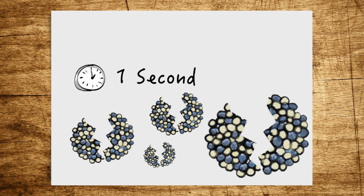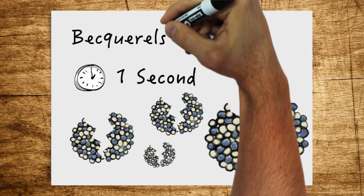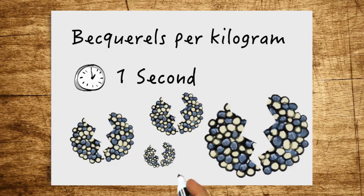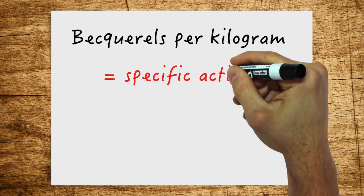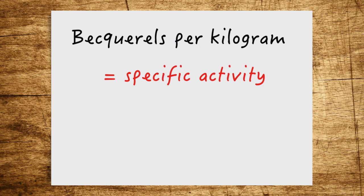Frequently, this so-called activity is indicated for a given quantity of a substance, for example in Becquerels per kilogram, which is then referred to as specific activity. However, there are also values in Becquerel that relate to volumes or areas.